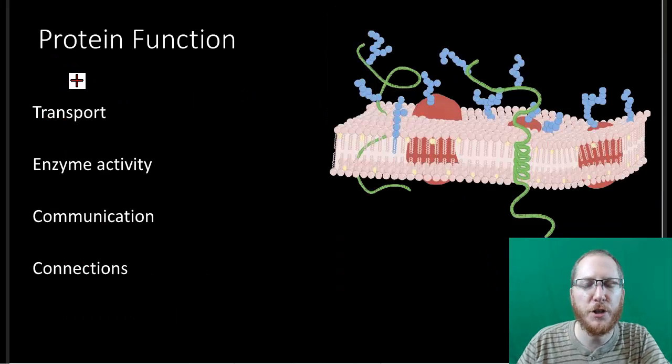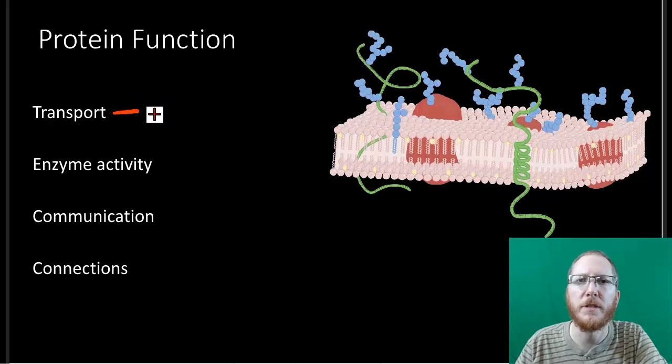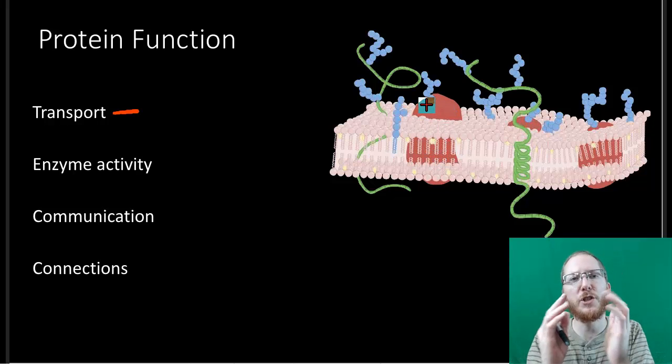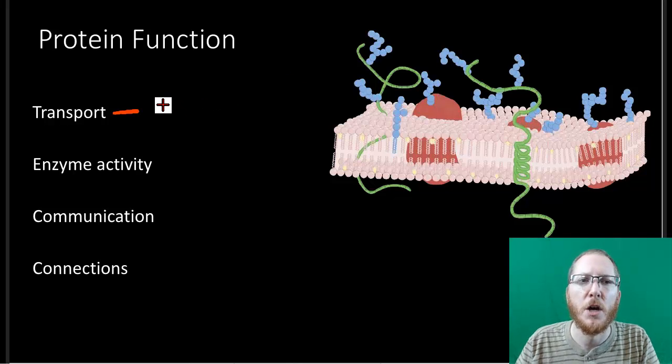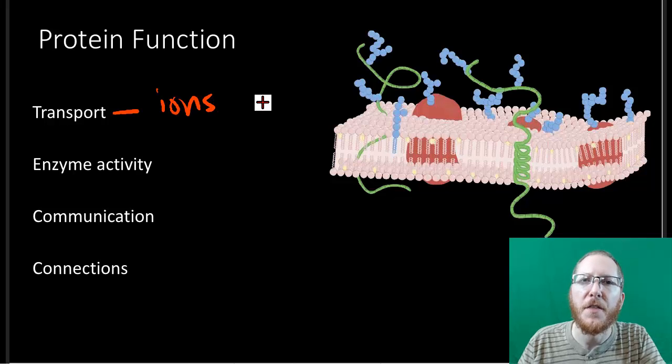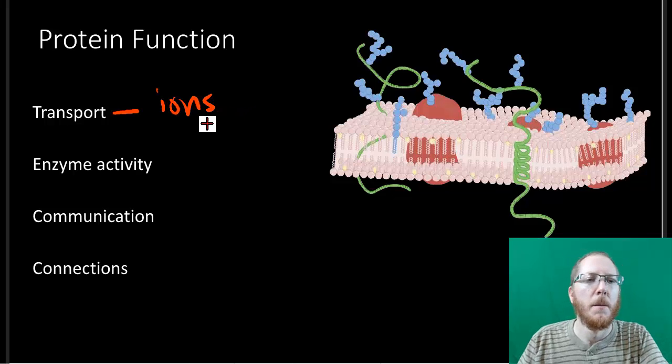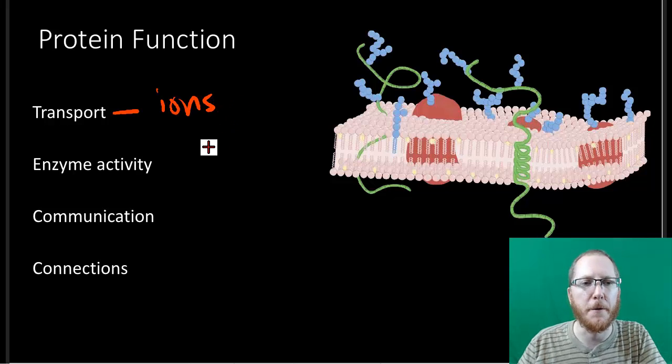Protein function. So proteins will function in transport, which we'll talk about during cell transport a little bit later. And so especially those transmembrane proteins will sometimes have channels, or sometimes we'll call them carrier proteins, or pumps where they can change shape. And so they can bring things into or out of the cell that otherwise couldn't get in. So you'll see a lot of times these transport proteins will be used for things like ions because ions do not get along with the phospholipid bilayer. They're going to take the place of things that otherwise could not pass through the phospholipid bilayer.